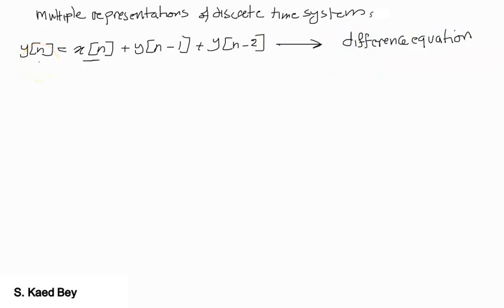What does that really mean? That the output now equals the input now, plus the output yesterday, plus the output day before. So this system depends on existing and past information, and we call these systems causal.